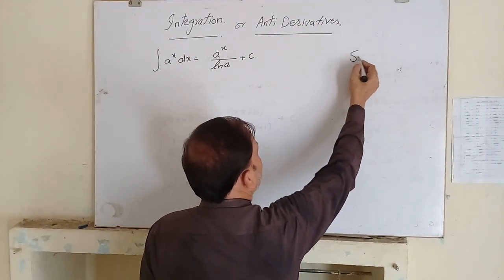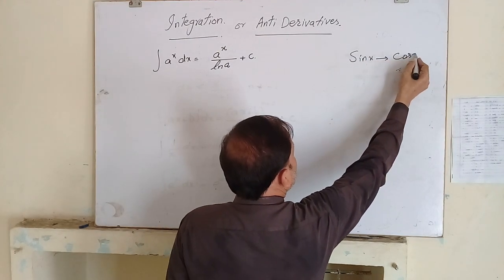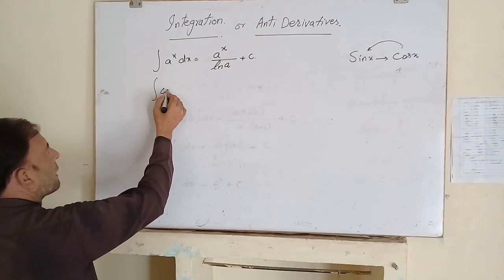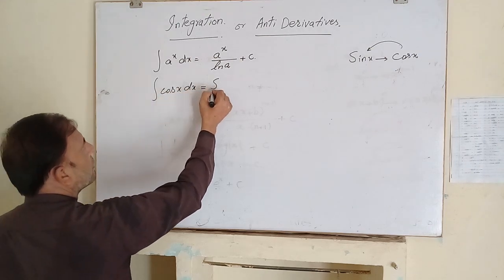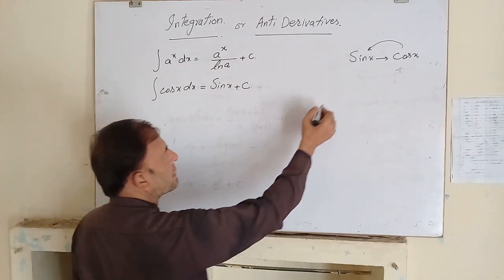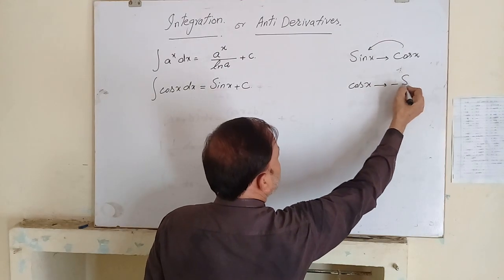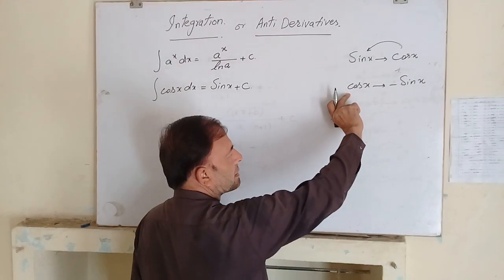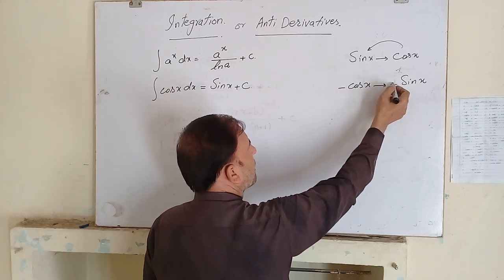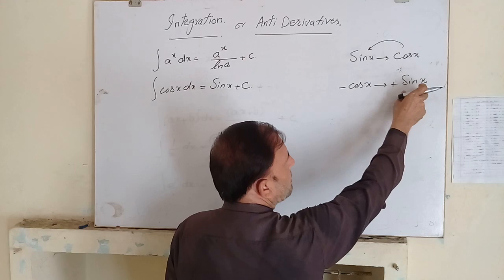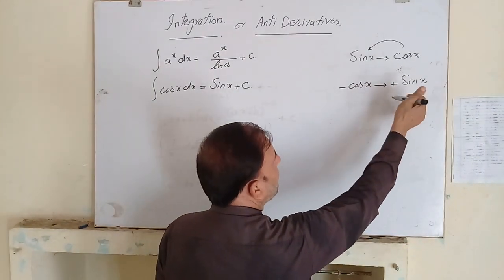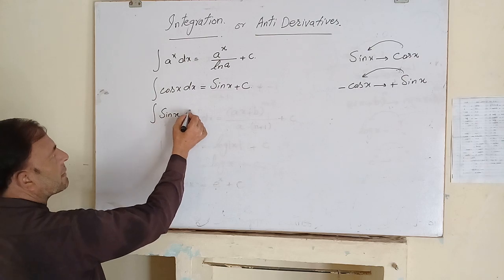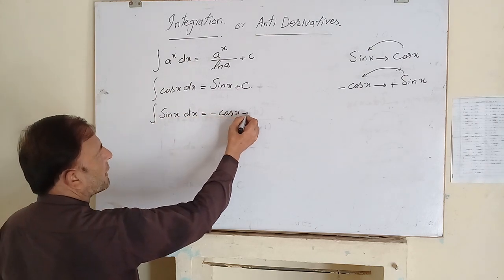We have the derivative of sin x is cos x. It means the integration of cos x is equal to sin x plus the constant of integration. The derivative of cos x is minus sin x. It means the integration of minus sin x is cos x. Multiplying both sides by minus 1, the derivative of minus cos x is sin x, so the integration of sin x is equal to minus cos x plus c.